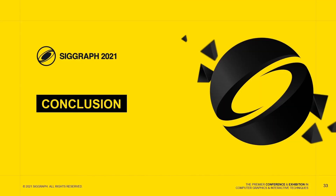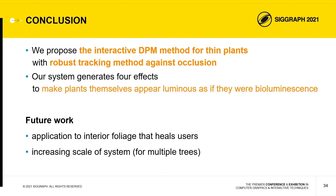Finally, we'd like to conclude. In this work, we propose the interactive dynamic projection mapping method for thin plants with a robust tracking method against occlusion. Additionally, our system generates four effects to make plants themselves appear luminous as if they were bioluminescence. In future work, we expect our system would be applicable to interior foliage that heals users. We would also like to improve our system to increase its scale and number of targets.